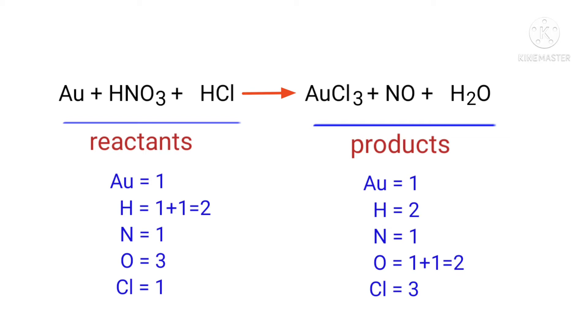If you look at this equation, the equation is not balanced. In the reactants side there are 1 gold atom, 2 hydrogen atoms, 1 nitrogen atom, 3 oxygen atoms, and 1 chlorine atom present.